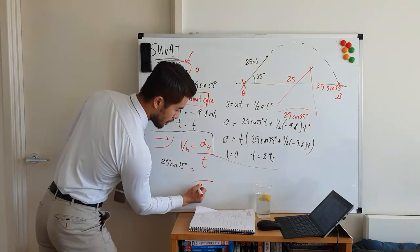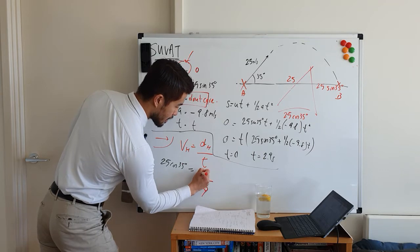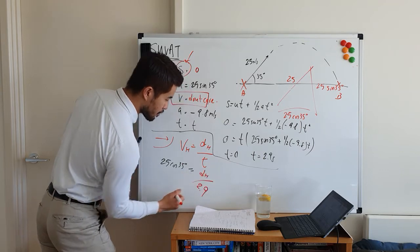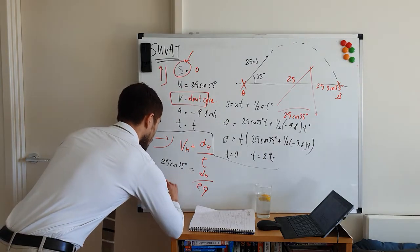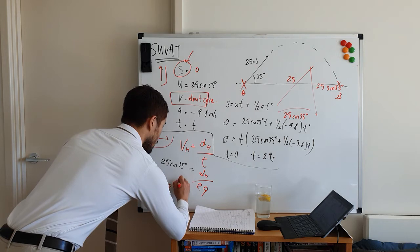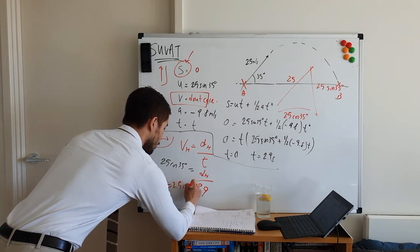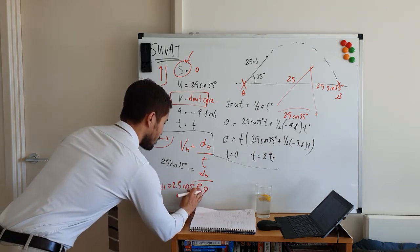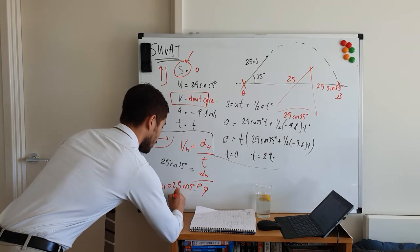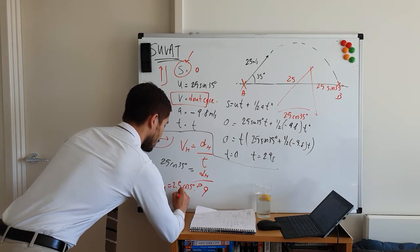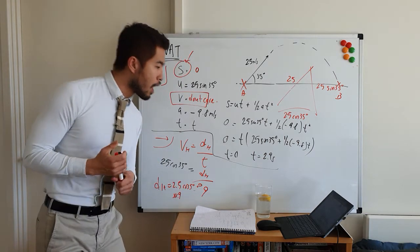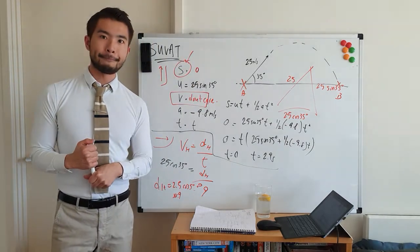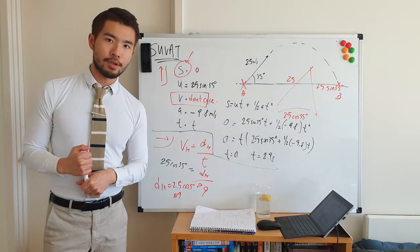So substituting t equals 2.9 seconds into the horizontal equation, the horizontal distance will be 2.9 times 25 cos 35 degrees. Try slides 2 and 3 yourselves.